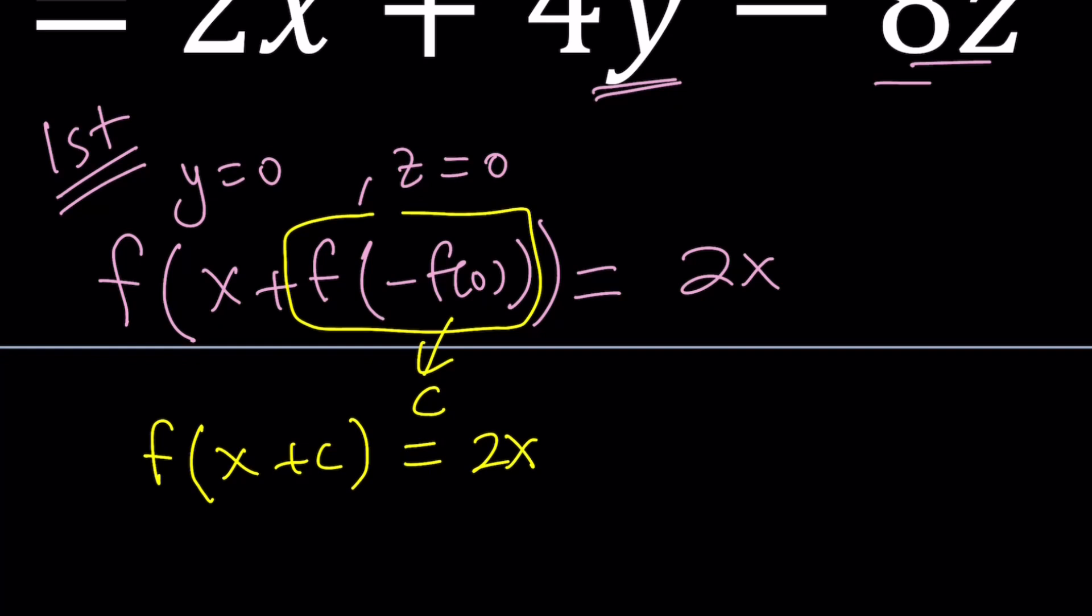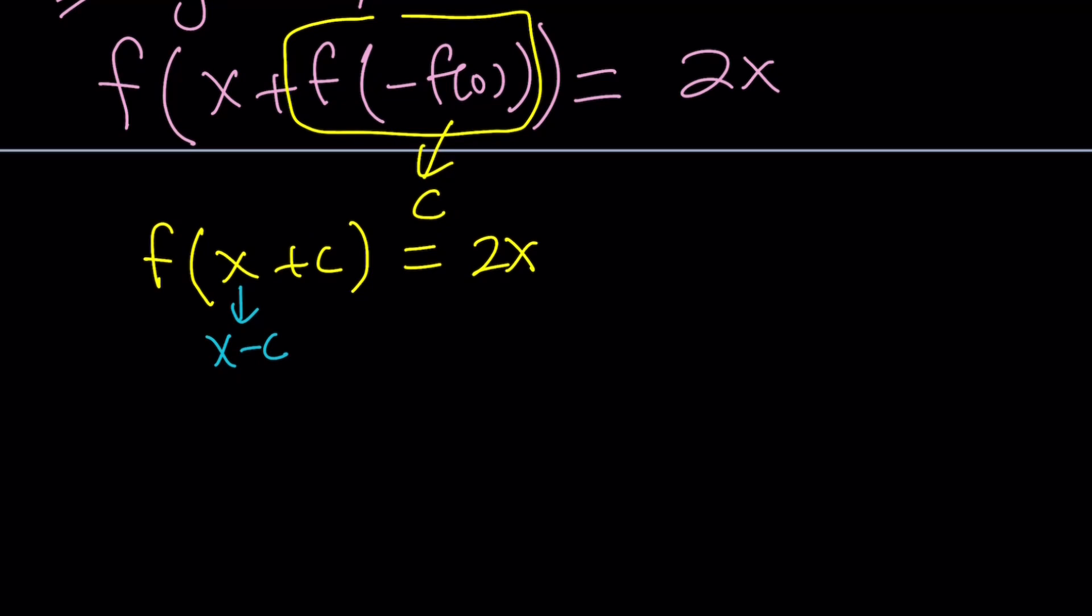And from here, we can do something smart and get f of x real quick. Replace x with x minus c because you have that type of freedom again. And of course, you have to do it on both sides. But this is going to give you f of x minus c plus c. And notice that the c cancels out. And that leaves you with f of x equals, on the right-hand side, I'm replacing x with x minus c. So I get 2 times x minus c, or 2x minus 2c. 2c or not 2c. Hopefully, you do see what I see.